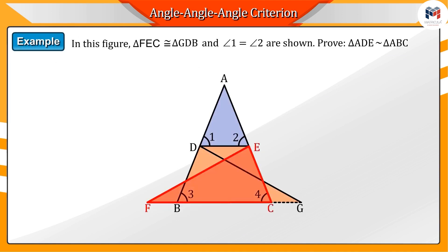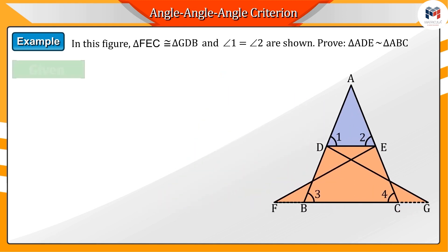In the given figure, triangles FEC and GDB are congruent and angles 1 and 2 are similar. Show that triangles ADE and ABC are similar triangles.